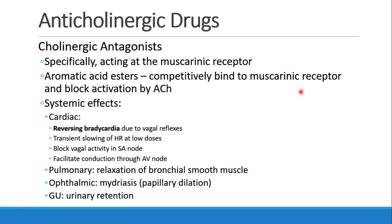Back to the cholinergic system. Acetylcholine is the main agonist at the cholinergic receptors. What about cholinergic antagonists? We talked about atropine, which is the primary muscarinic antagonist. The antagonists we're most interested in are those that act at the muscarinic receptor. There are different aromatic acid esters that can competitively bind to the muscarinic receptor and block acetylcholine. When we put an antagonist at the cholinergic muscarinic receptor, we expect to see sympathomimetic effects.